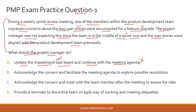Always look for options that reflect active ways of problem solving. Option B: acknowledge the concern and facilitate the meeting agenda to explore possible resolutions. A red flag here is that you are in a sprint review meeting. If you use this sprint review meeting to explore possible options for the highlighted risk, what will happen to the review that was actually planned? This is probably not the correct answer, but let's hold it and see if we can find something better.